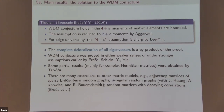The Wigner-Dyson-Mehta conjecture: if the moments of the matrix elements have 4 + ε moments, then the conjecture holds — both in the bulk and at the edge. In the bulk the assumption has been reduced to two moments by a later paper.